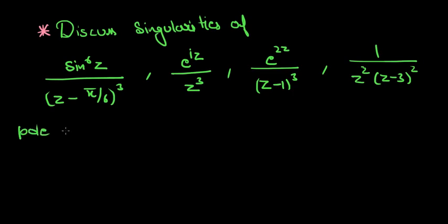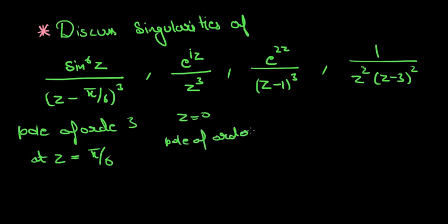Here z equal to 0 is a pole of order 3. Here z equal to 1 is a pole of order 3. And here z equal to 0 is a pole of order 2, and z equal to 3 is a pole of order 2 also.